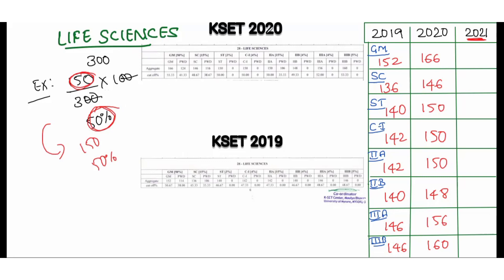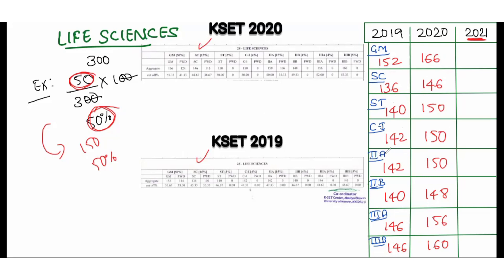Now moving to the cutoff analysis. This is the 2019 cutoff and this is 2020. Based on the category, for general merit: 2019 cutoff was 152 and 2020 was 166. For SC: 136 in 2019 and 156 in 2020. For ST: 140 in 2019 and 150 in 2020. Category 1: 142 and 150. Category 2A: 142 and 150. Category 2B: 140 and 148. Category 3A: 146 and 156. Category 3B: 146 and 160. See the difference — from 152 in 2019 to 166 in 2020, that's a 14-mark difference.